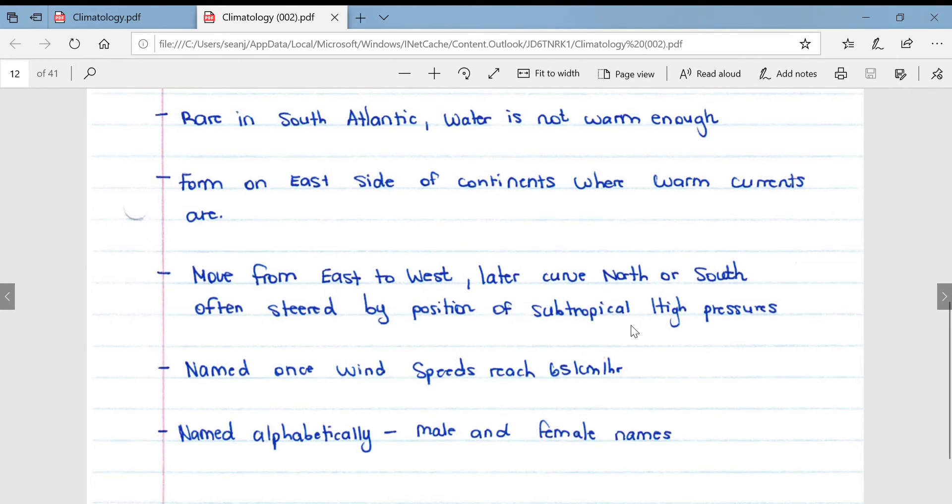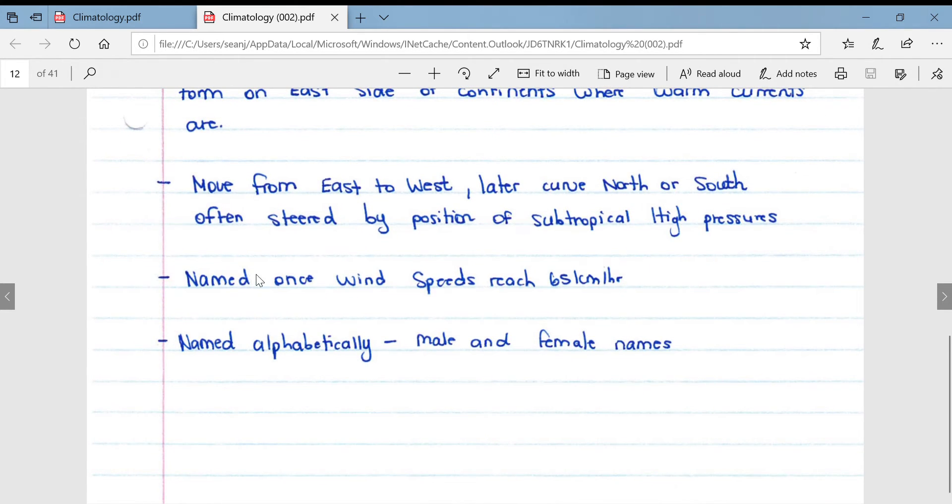Tropical cyclones are named once wind speeds reach 65 kilometers per hour, and obviously they are named alphabetically and they alternate between male and female names. So a little trick question that people often get confused by is they'll give you a name of a cyclone, say the cyclone is Boris or whatever. Then you would know okay, it begins with a B, so it must be the second tropical cyclone of the season.